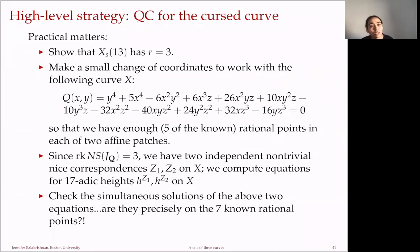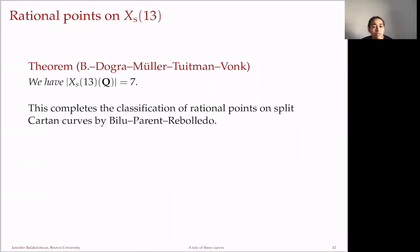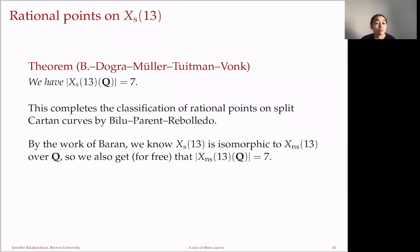The theorem, joint with Dogra, Mueller, Tuitman, and Vonk, is that the split Cartan curve of level 13 has exactly the seven rational points that Galbraith found. This completes the classification of rational points on split Cartan curves started by Bilu-Parent-Rebolledo. Since Baran showed X_split(13) is isomorphic to X_non-split(13) over ℚ, we also obtain for free that the non-split Cartan curve of level 13 has exactly seven rational points. Thank you very much for your attention.